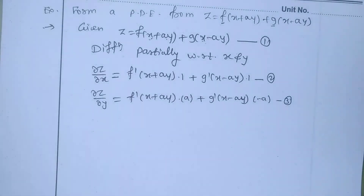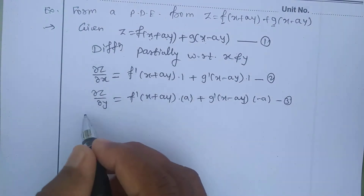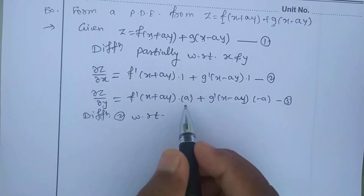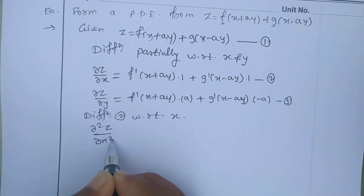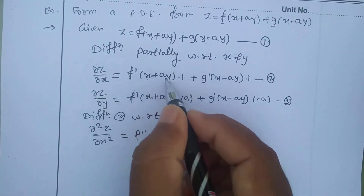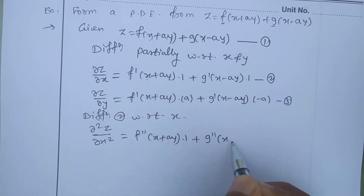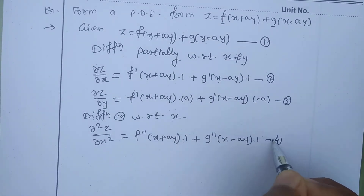Since we need a second-order differential equation, we must differentiate at least two times. Differentiating equation two with respect to x partially: ∂²z/∂x² equals f''(x + ay) times the derivative of (x + ay) with respect to x, which is 1, plus g''(x - ay) times the derivative of (x - ay) with respect to x, which is again 1. Call this equation number four.